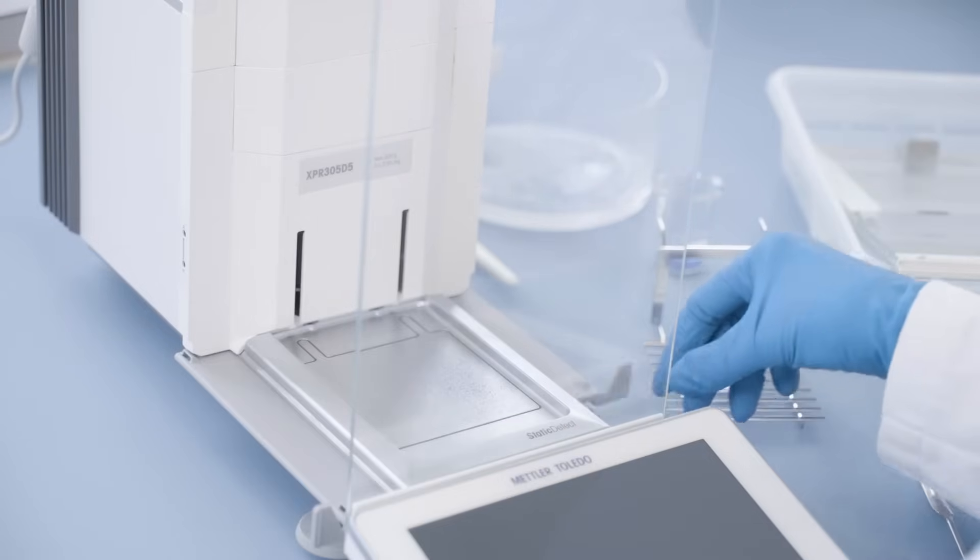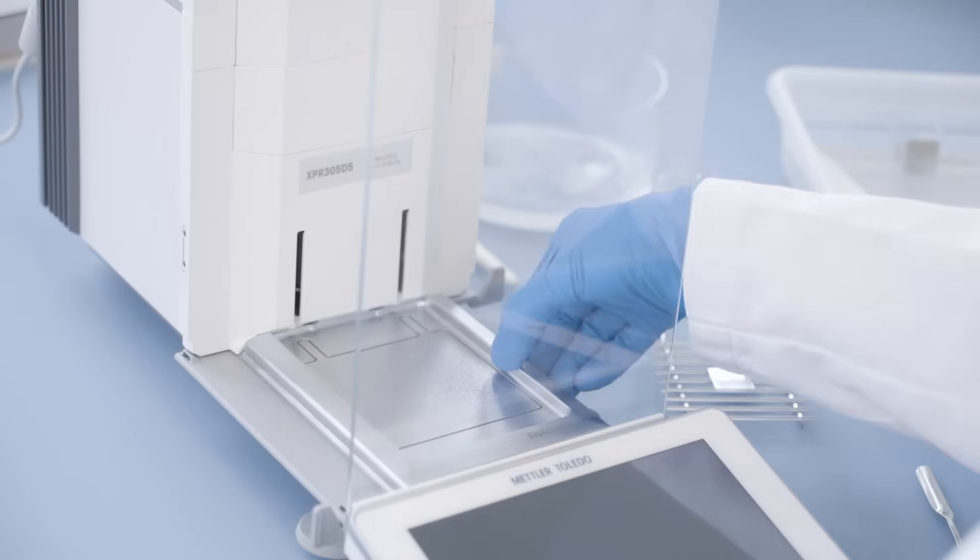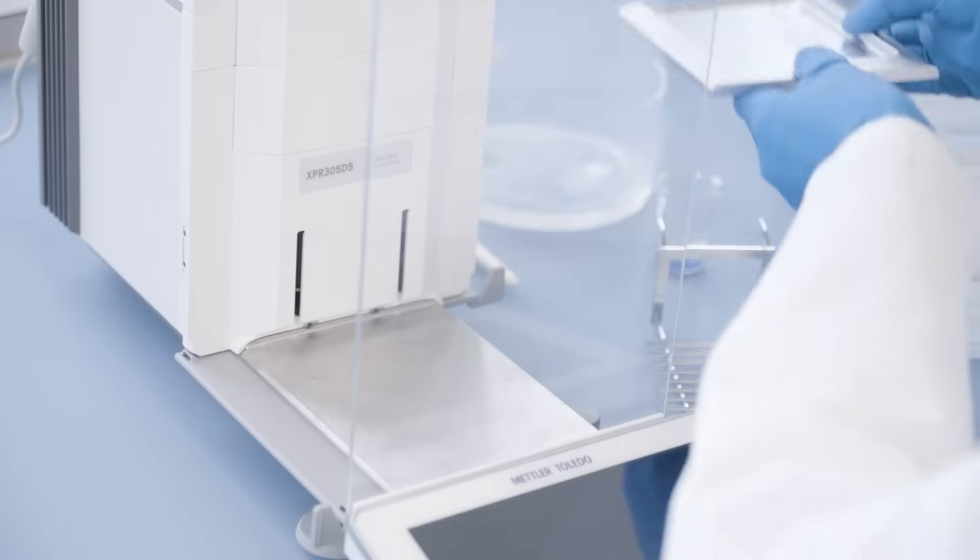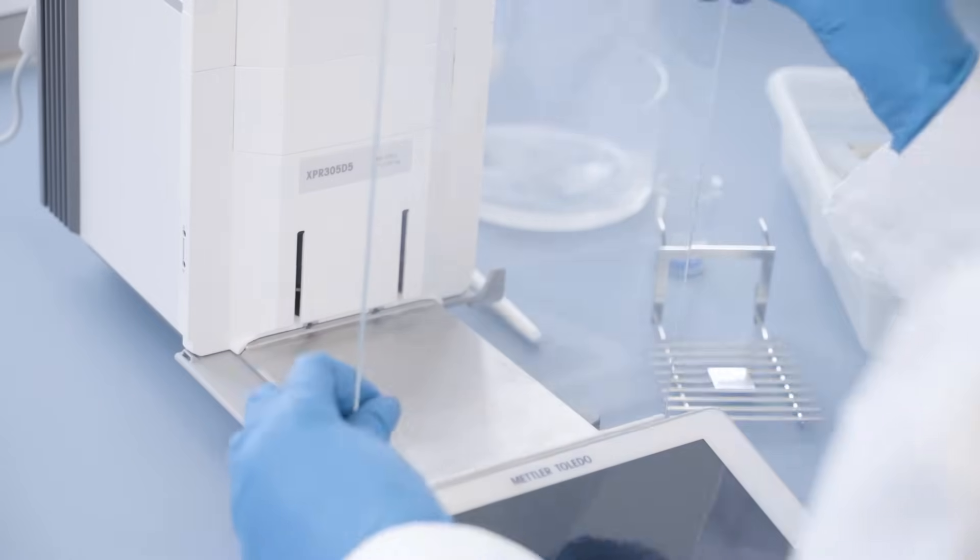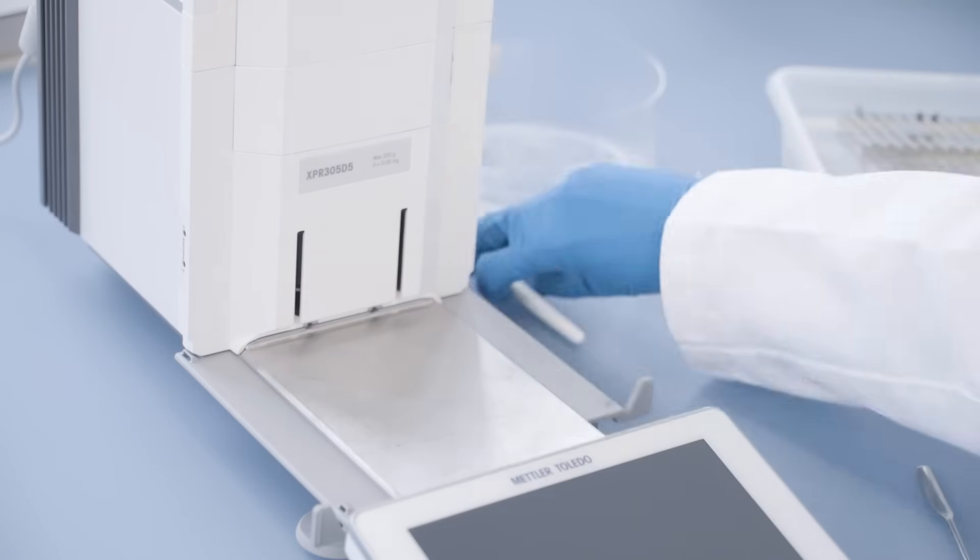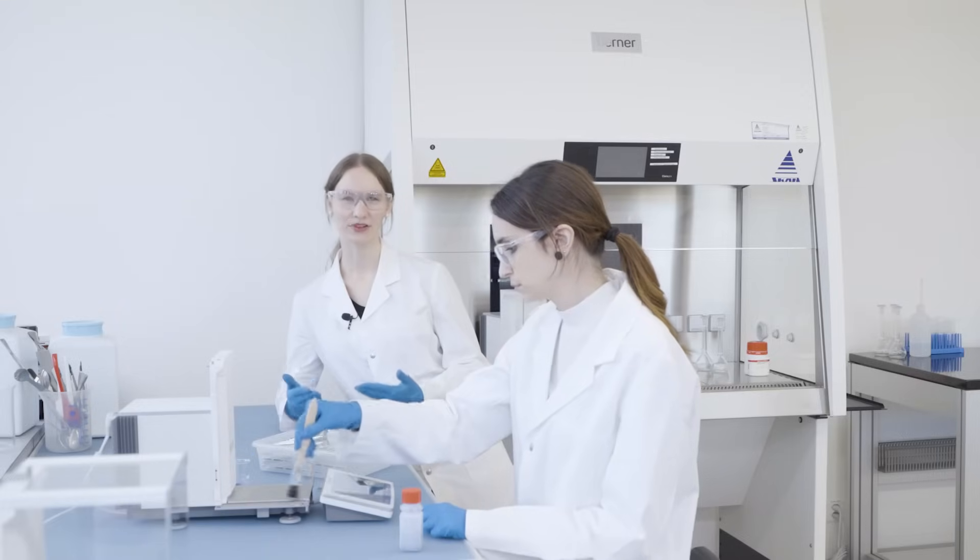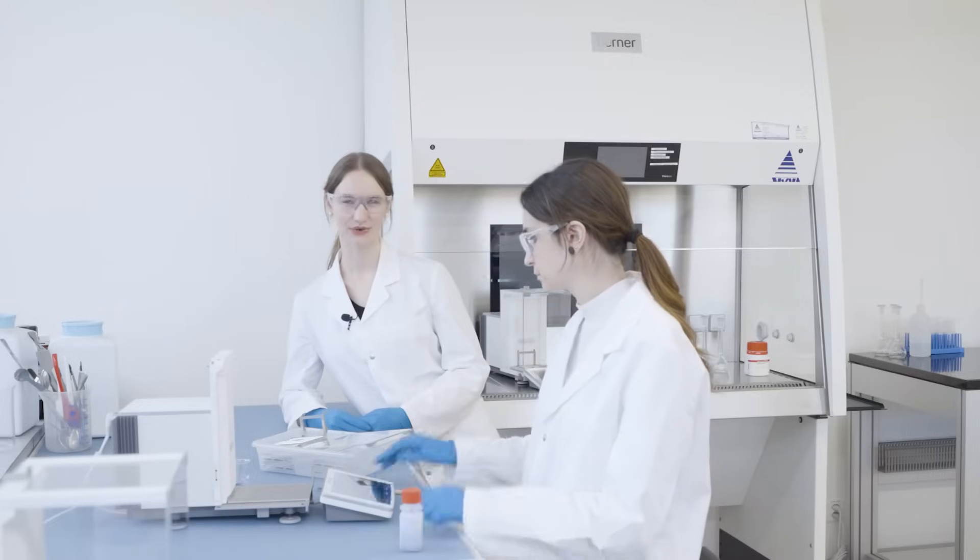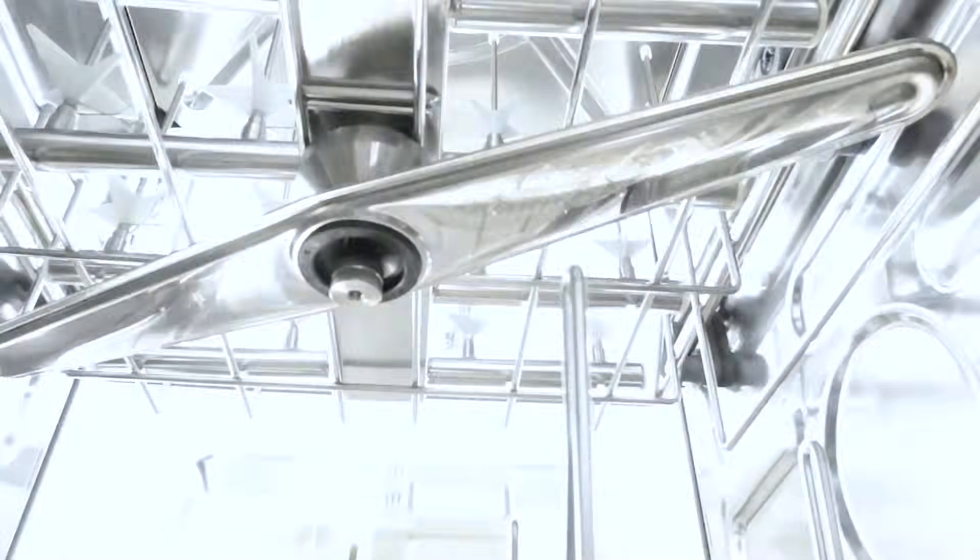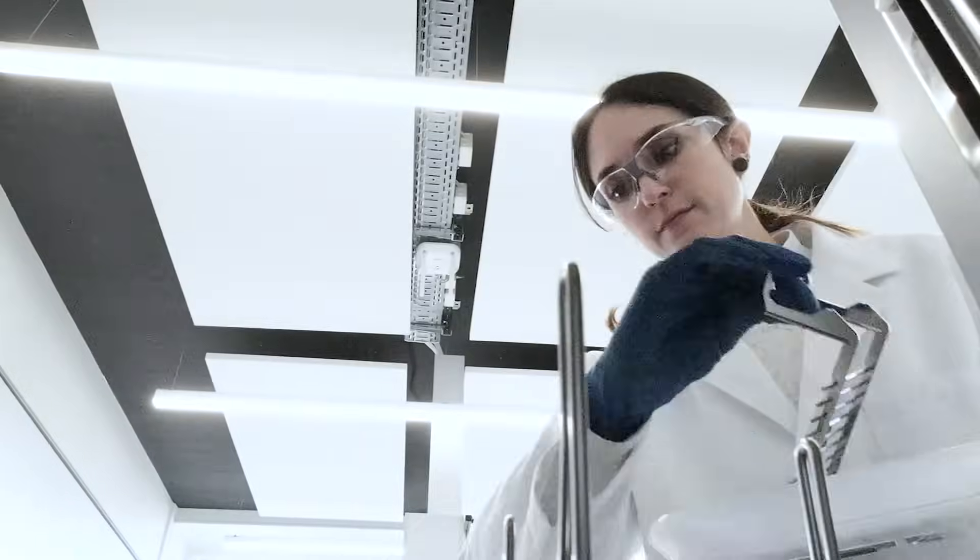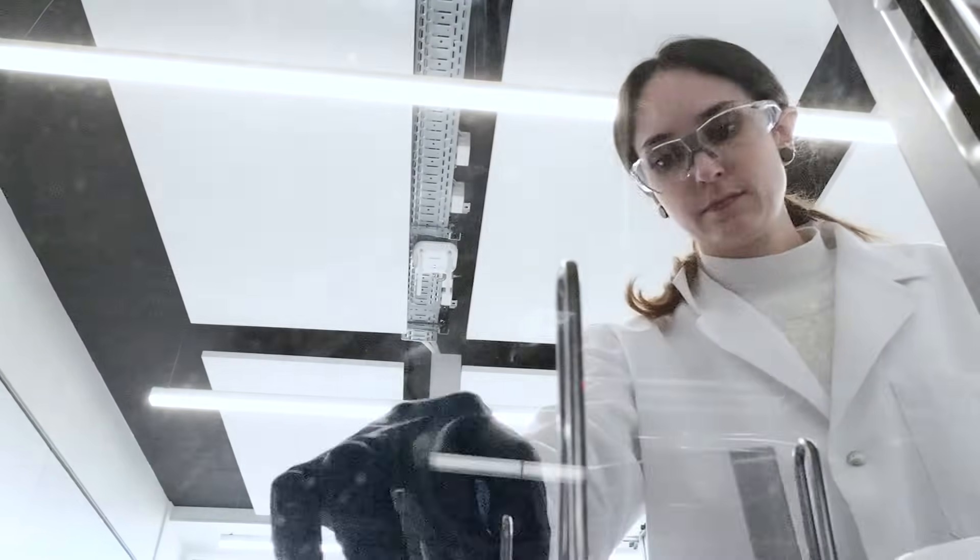The drip tray can be removed without losing spilled sample. The balance is very carefully designed with fully closed flat surfaces. This means sample will not get trapped, reducing your risk of cross contamination. All parts are dishwasher proof. And of course, all materials used are resistant to most chemicals for durability and cleanability.